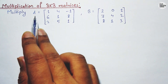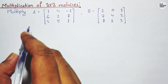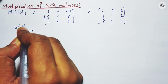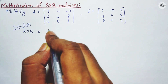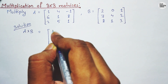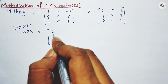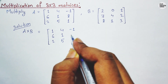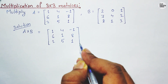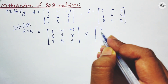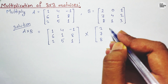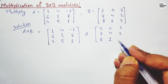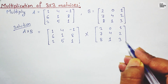Let's do the multiplication of these two matrices. The first one is A and the second one is B, and we will calculate A cross B — that is the multiplication. So I'm going to write here: solution A cross B. Matrix A is [6, 2, 4; 1, 5, -1; 8, 1, ?] and matrix B is [2, 7, 8; 0, 4, 1; 1, 2, 3].